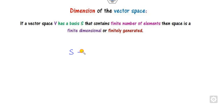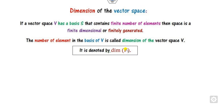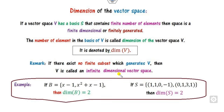Once you have proved that S is a basis, the question arises: how do you find the dimension? If S satisfies both properties — linear independence and span — then the number of elements in S gives the dimension of the vector space, denoted as dim(V). If S consists of a finite number of elements, we call it finite dimensional; otherwise it is infinite dimensional. For example, if a basis has two polynomials, then the dimension is 2; similarly, if it has two vectors, the dimension is 2.